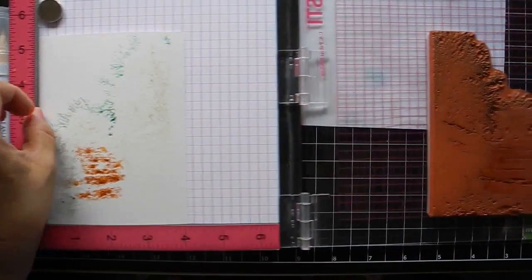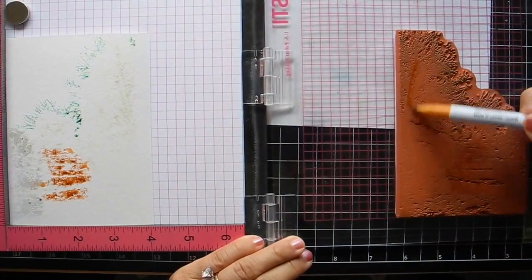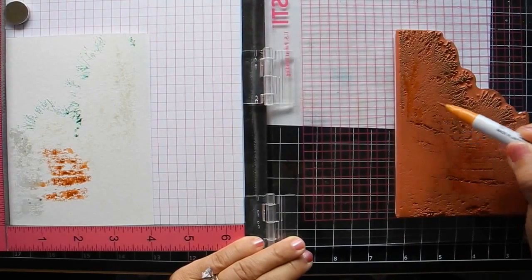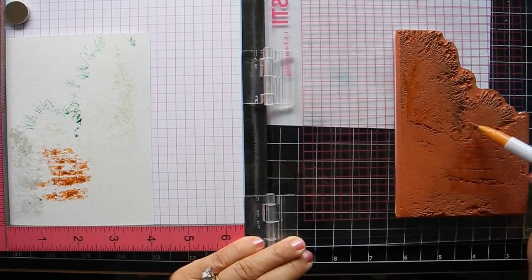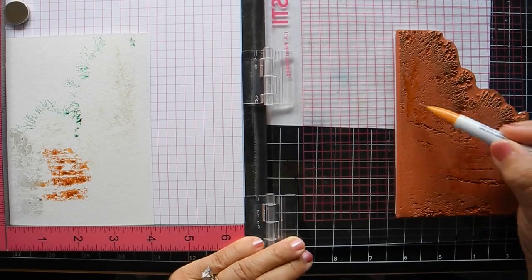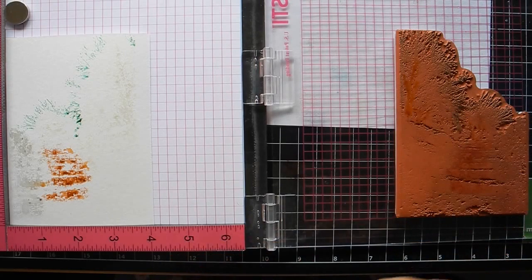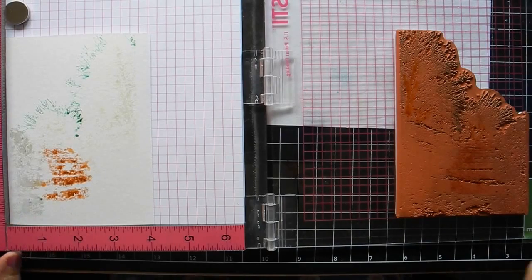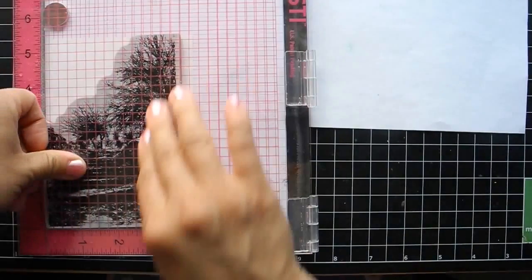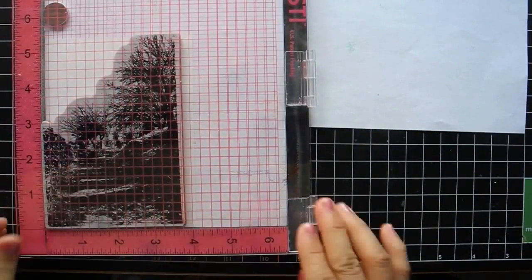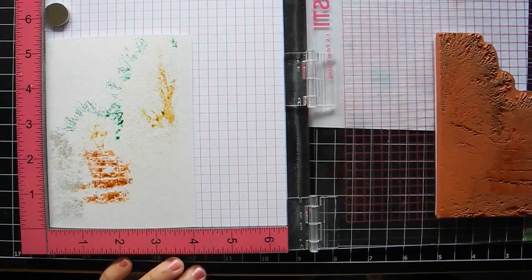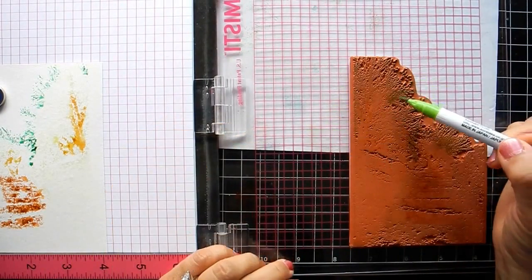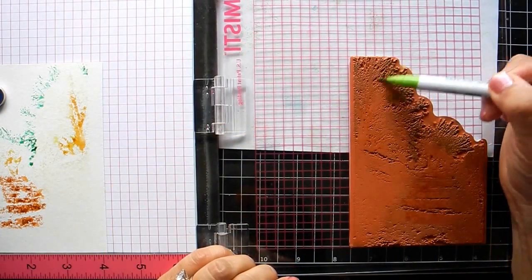And each time you take a spritz of water and stamp. So I'm going to continue to work on this. And next I'm stamping, brushing the tree trunk, again, spray water, and keep building up.